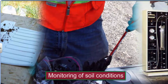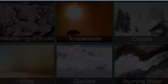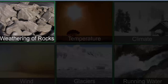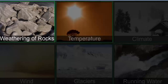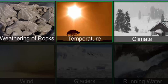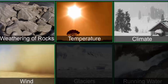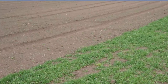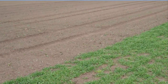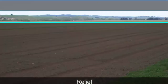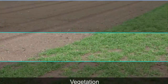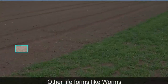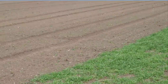Soil is formed over millions of years by weathering of rocks and minerals, and also by natural agents like variation in temperature, climate, wind, glaciers, and running water. The important factors that influence soil formation are relief, parent rock, vegetation, other life forms, and most importantly, time.